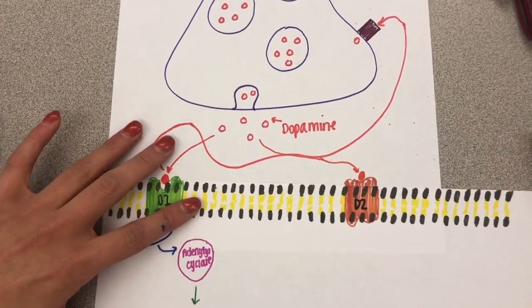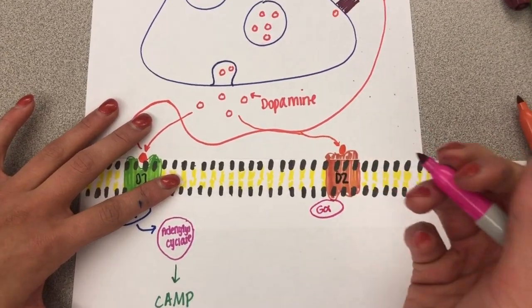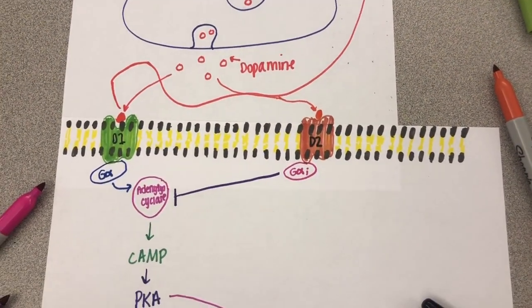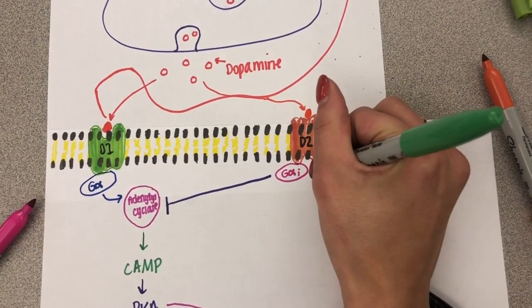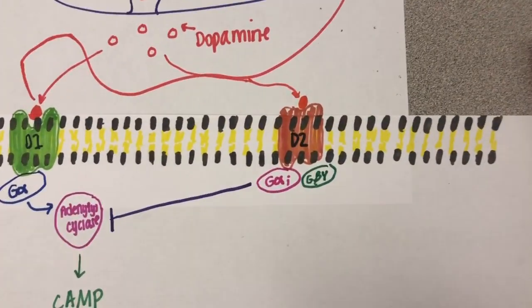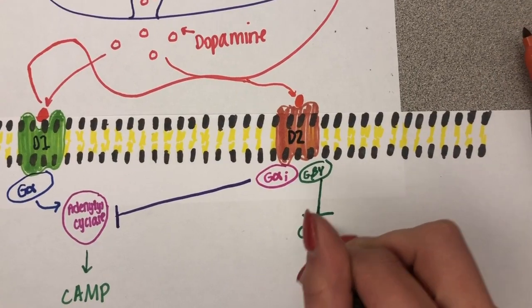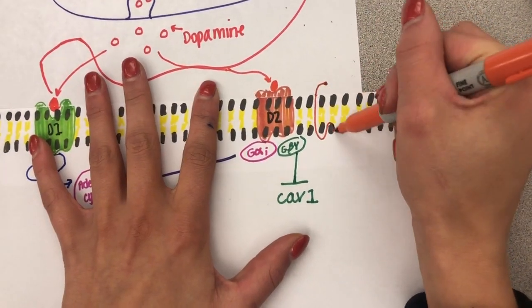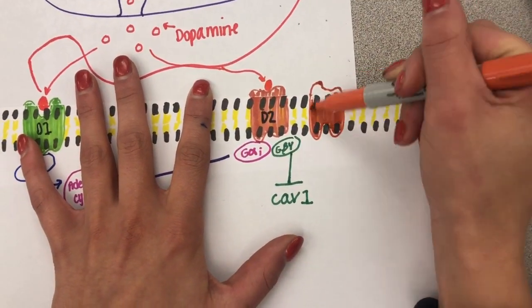A G protein connected to the D2 receptor separates into alpha and beta-gamma subunits. The alpha subunit inhibits adenylyl cyclase, resulting in no excitable response due to a lack of protein phosphorylation. The beta-gamma subunit inhibits cav1, resulting in a depressive response.